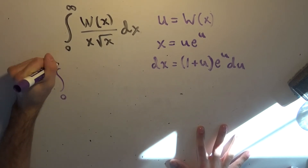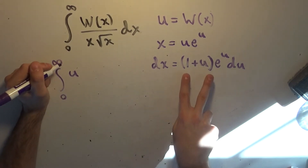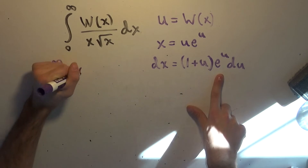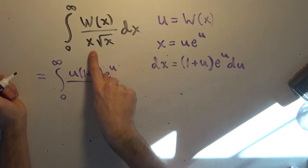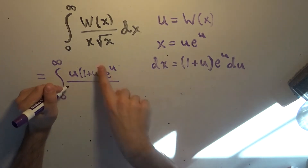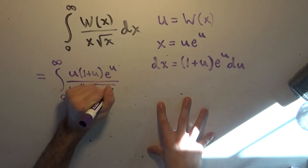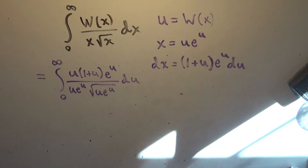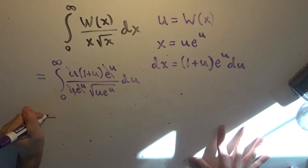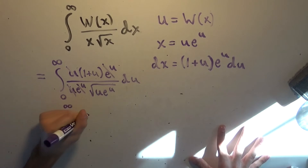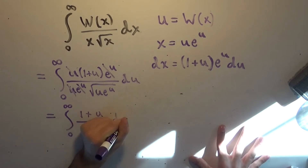We end up with the integral from 0 to infinity. W(x) is now u, so we get u multiplied by 1 plus u times e to the u in the numerator. We're dividing by x, which is u times e to the power of u, times the square root of u times e to the power of u, with du out front. Notice we get nice cancellations: the u cancels with the u, and e to the u cancels with e to the u. We end up with the lovely integral from 0 to infinity of (1 plus u) divided by the square root of u times e to the u, du.